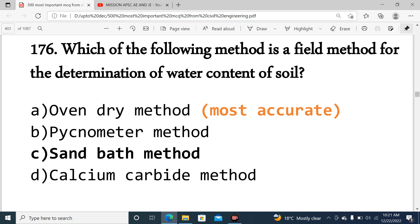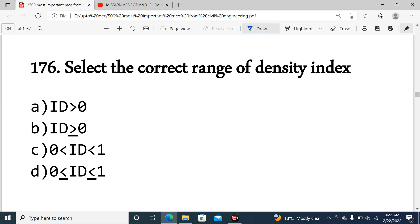Which method is most accurate? The calcium carbide method uses chemicals and is a laboratory test. The pycnometer method is also a laboratory test.